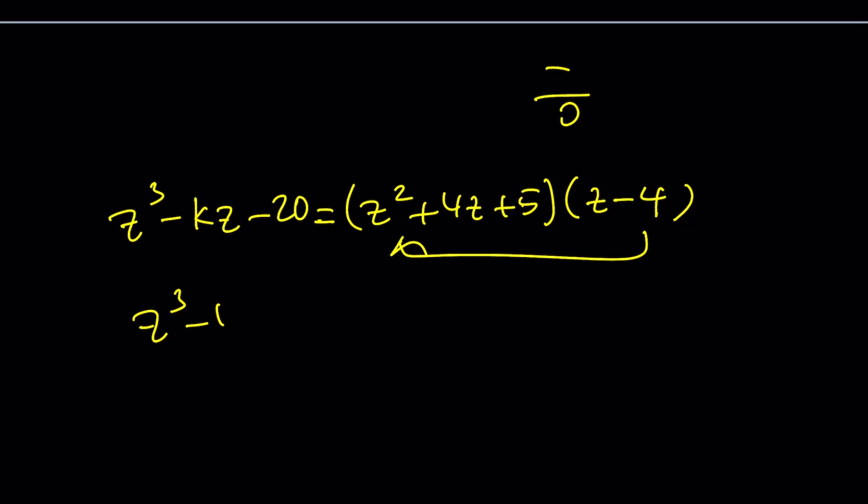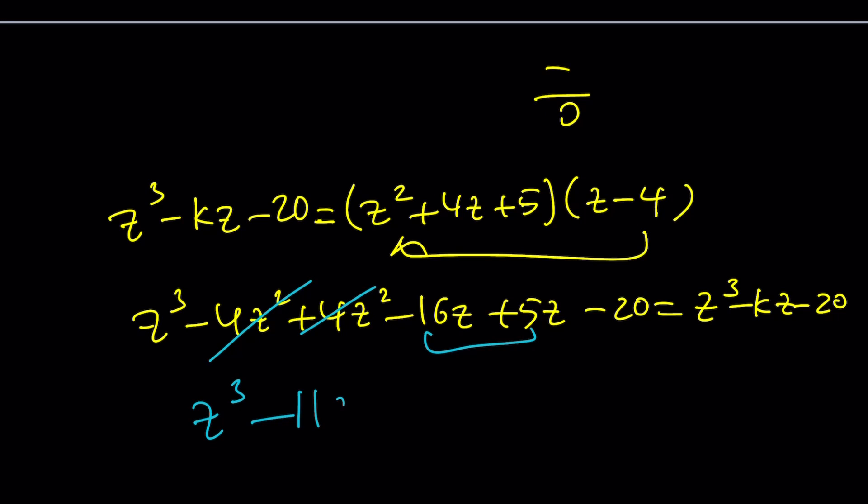Z cubed minus 4Z squared plus 4Z squared minus 16Z plus 5Z minus 20. It's supposed to equal Z cubed minus KZ minus 20. Take a look at this. Take a good look. 4Z squared cancels out. This becomes Z cubed minus 11Z minus 20. And yes, K equals 11 again for the fourth time.